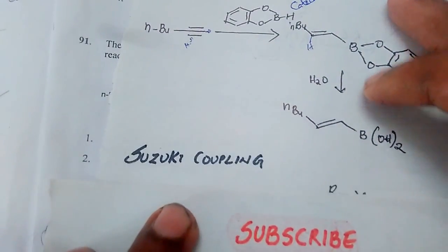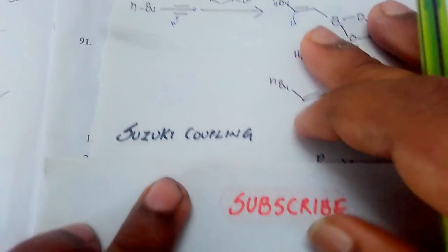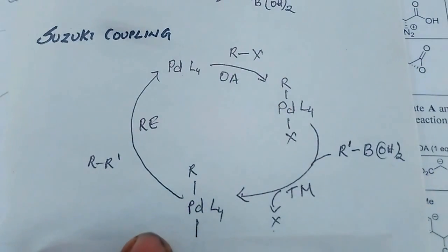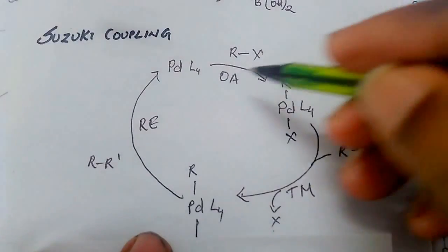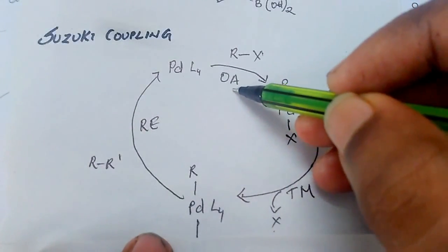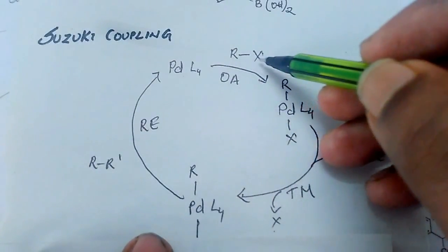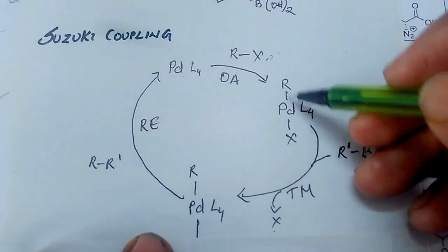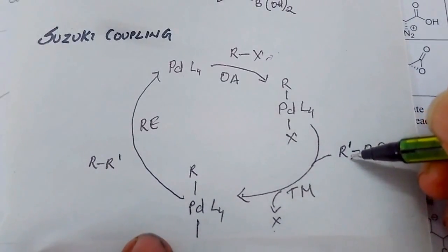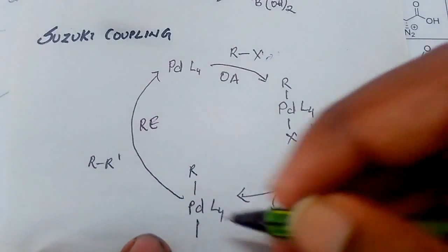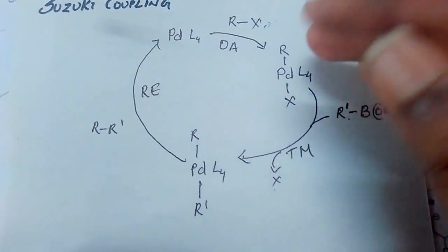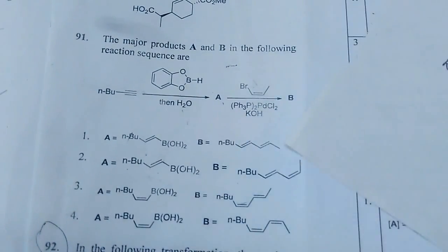The second thing is Suzuki coupling. Suzuki coupling has three steps. This is the general step where palladium and two metals, palladium and boron, are the main metals. The first step is oxidative addition with the R-X where X is the halogen. This is added oxidatively, then the transmetalation from the boron, the organic group is migrated to the palladium, and reductive elimination where these both two couples.